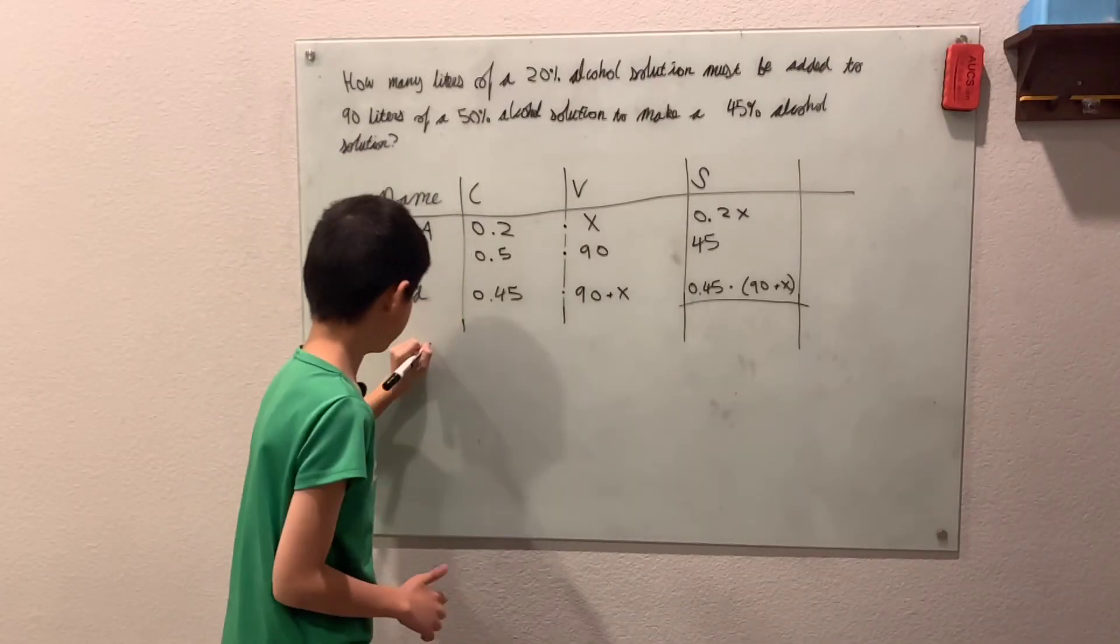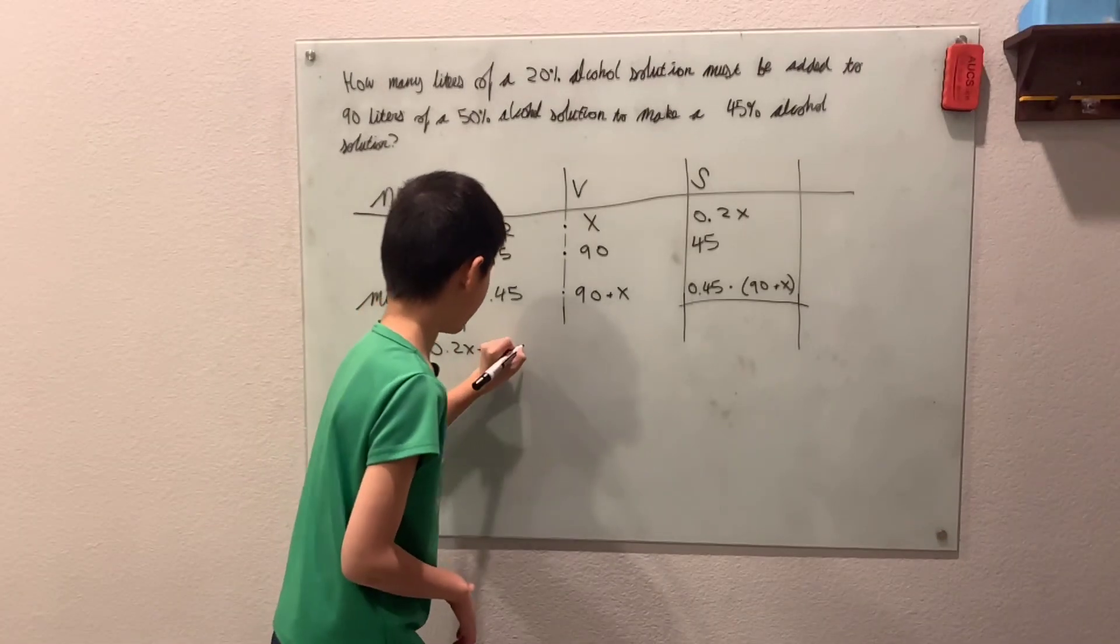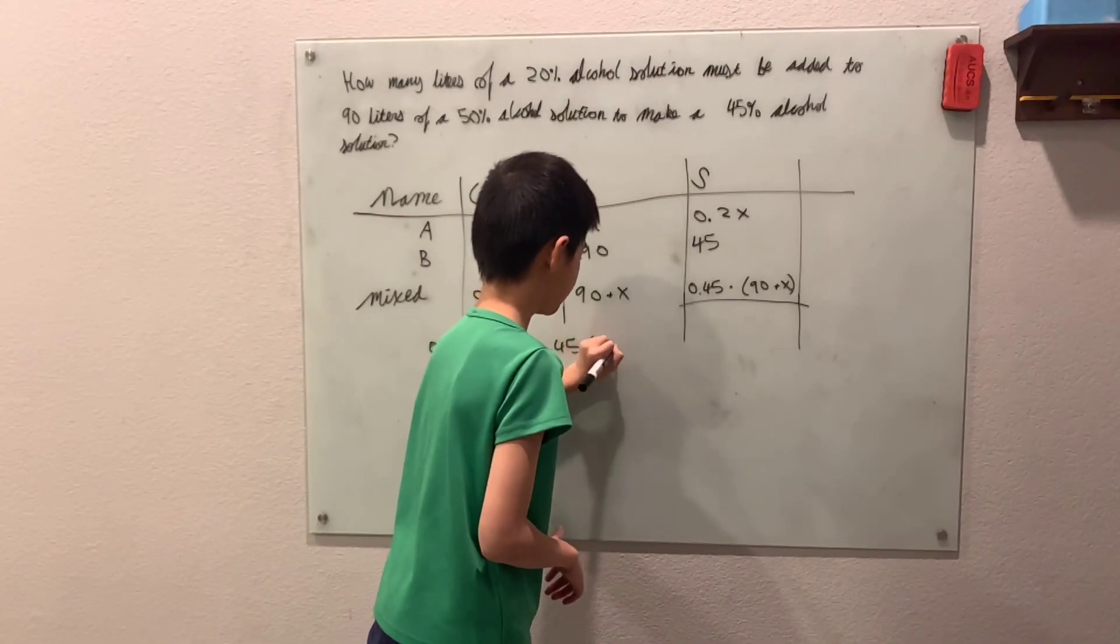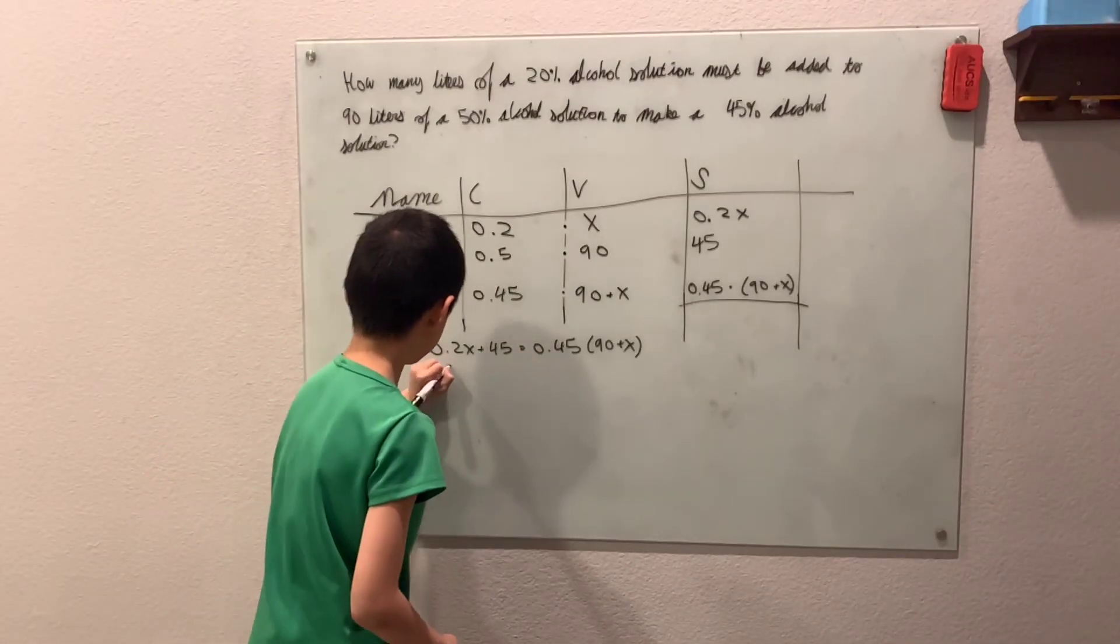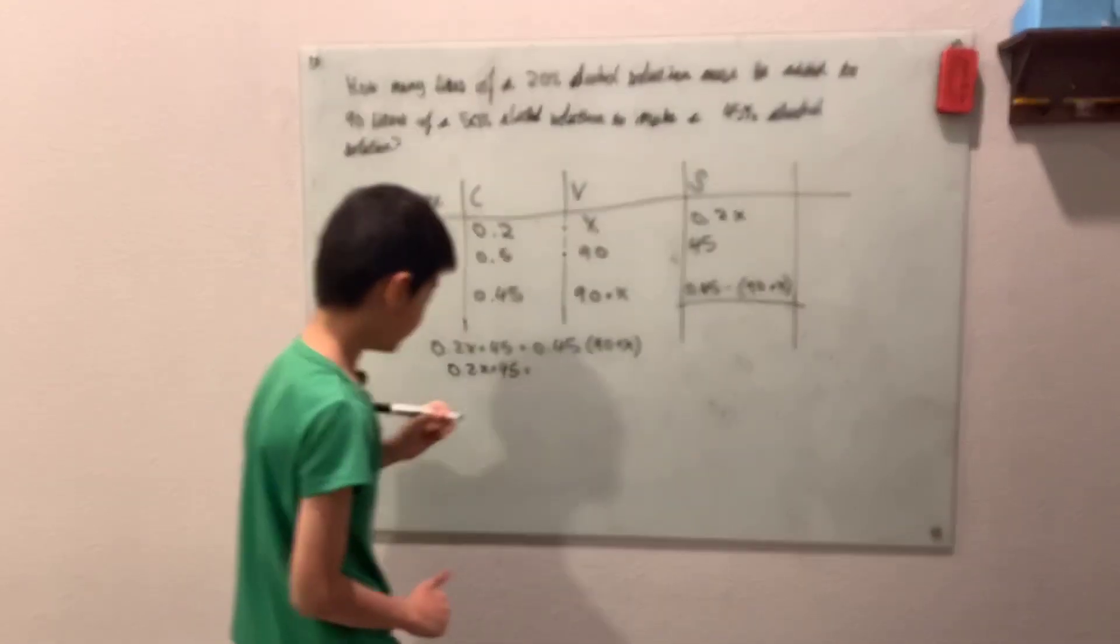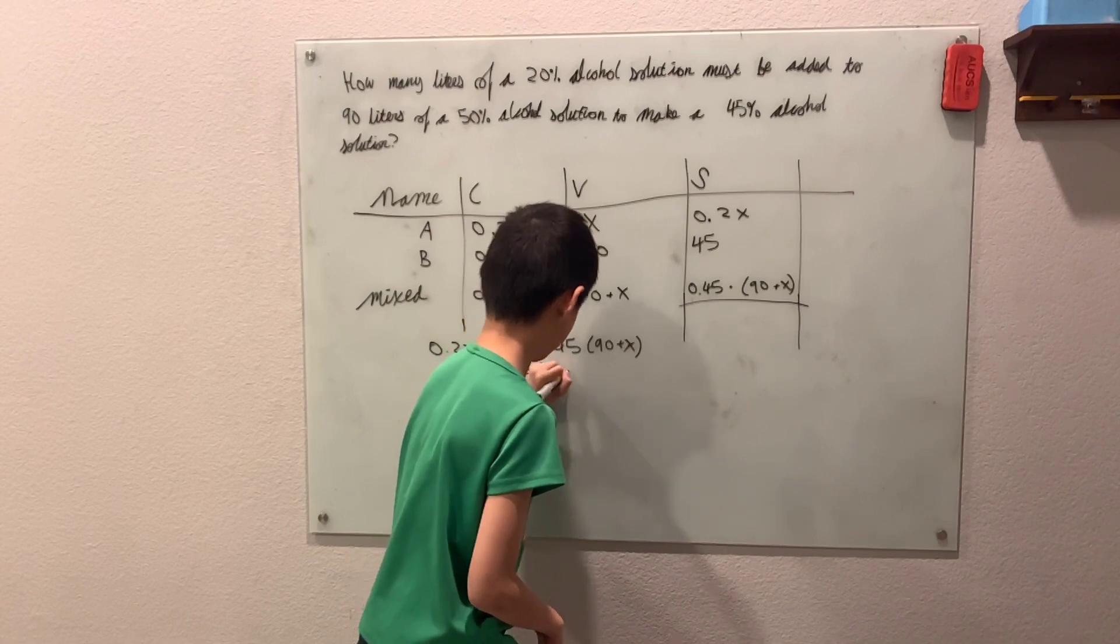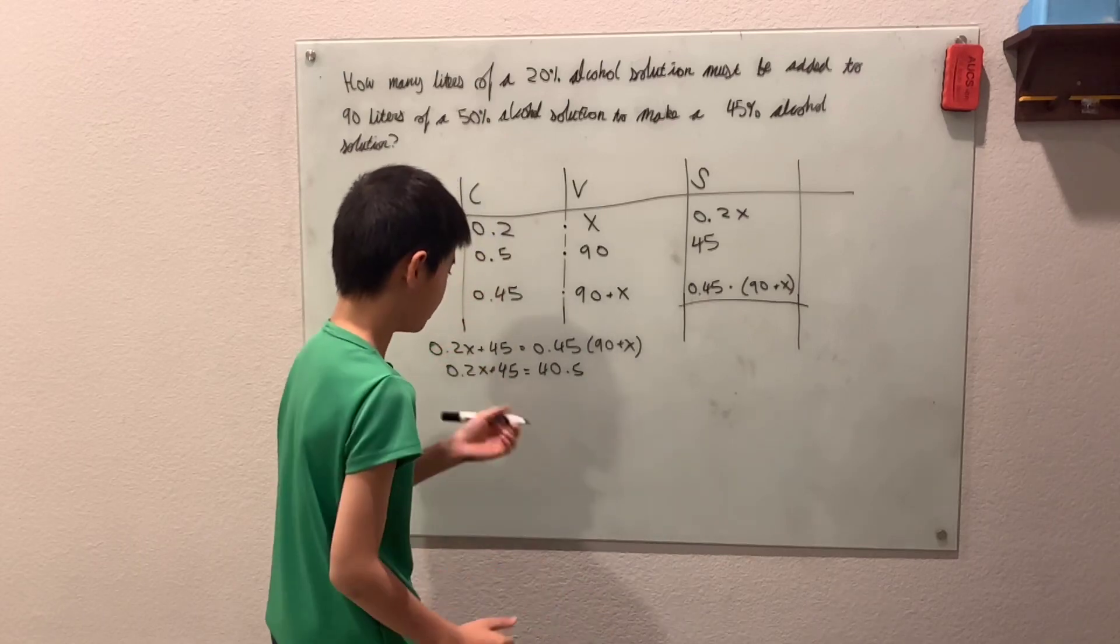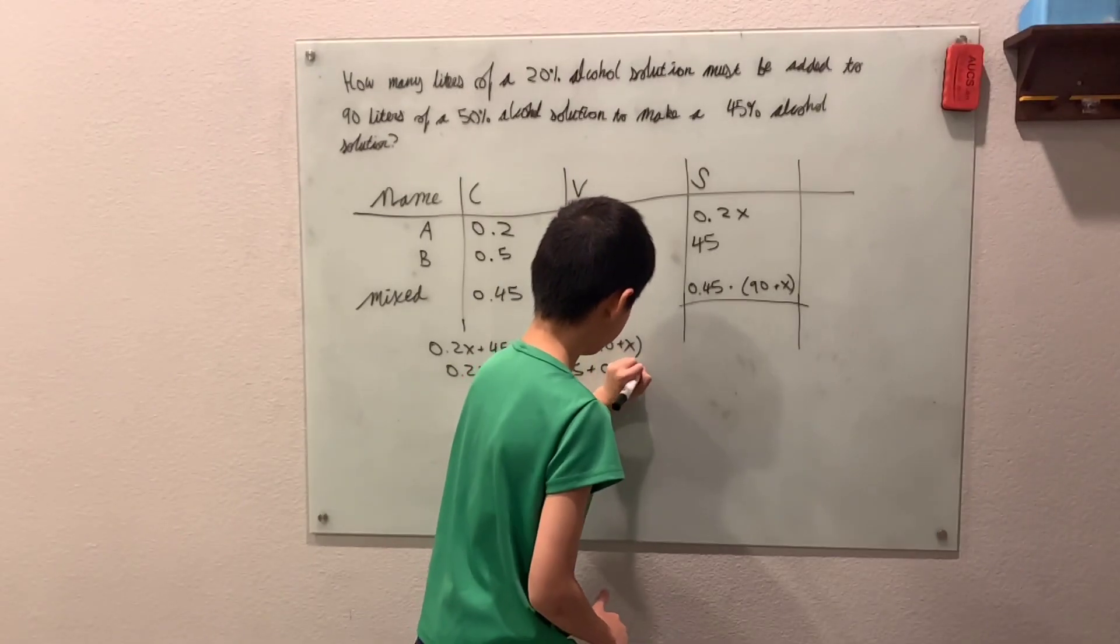So now we get an equation. We get 0.2X plus 45 equals 0.45 times 90 plus X. And now we'll see distributing on the right-hand side. I already did the math before, so I kind of know what to do here. We have 90 times 0.45, which is 40.5 plus 0.45X.